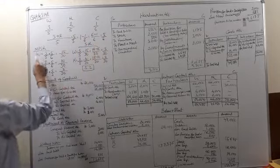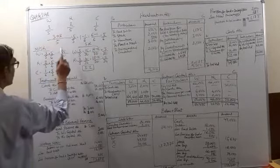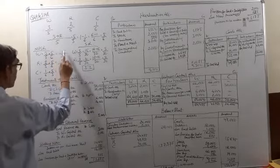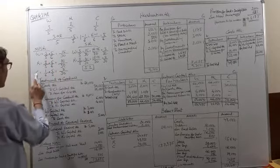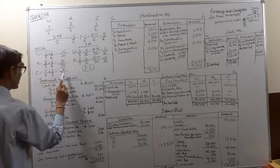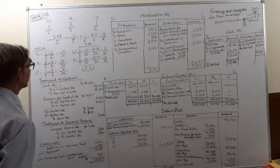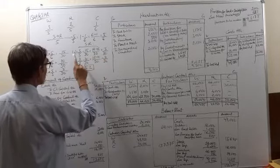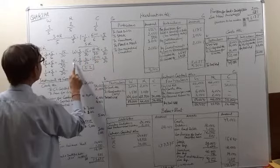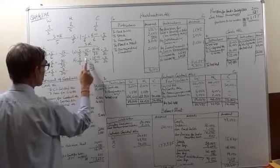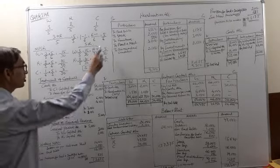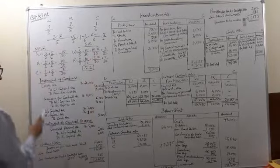The 5/6 will be distributed among the old partners in the old profit sharing ratio, which gives the new profit sharing ratio. For W it will be 15/30 and for R it will be 10/30. For C, coming for 1/6, to make the denominator equal to 30: 6 × 5 = 30, so C's share is 5/30. Sacrificing ratio for W: 3/5 minus 15/30 equals 3/30. For R: 2/5 minus 10/30 equals 2/30. So the sacrificing ratio is 3:2.